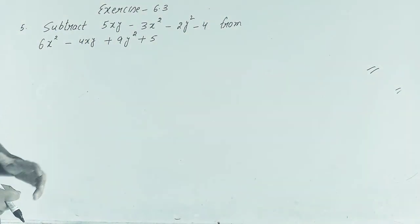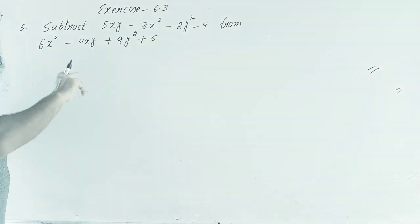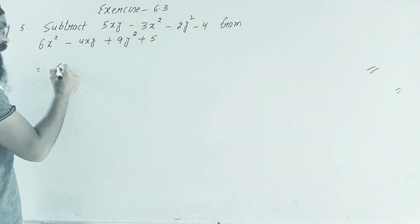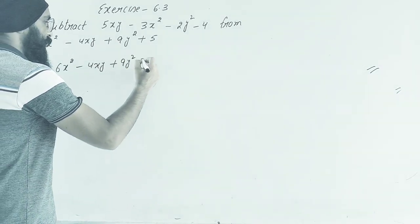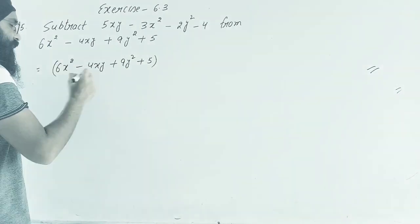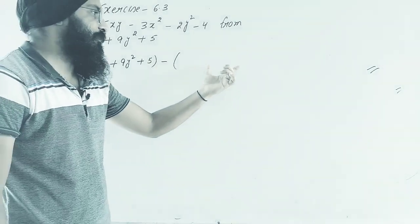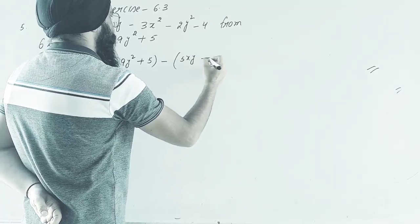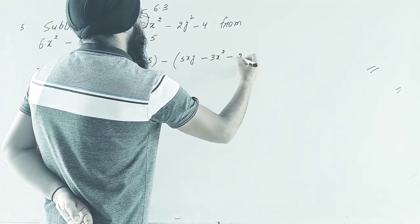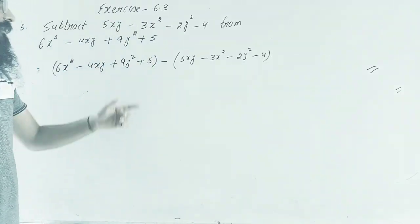The simple method is the horizontal method, so we will cover this by horizontal method. So let's go ahead: 6x square minus 4xy plus 9y square plus 5 minus, and the second expression is 5xy minus 3x square minus 2y square minus 4.